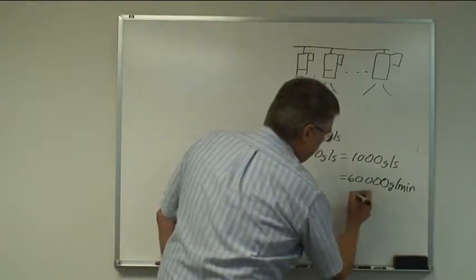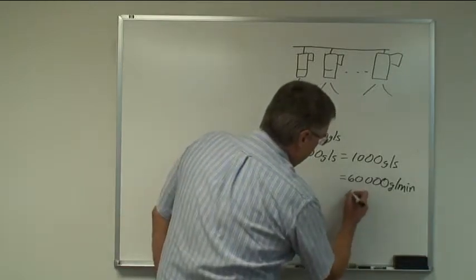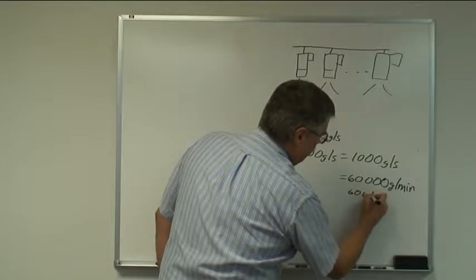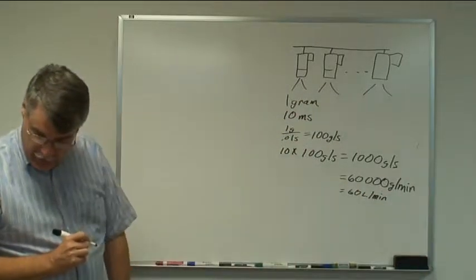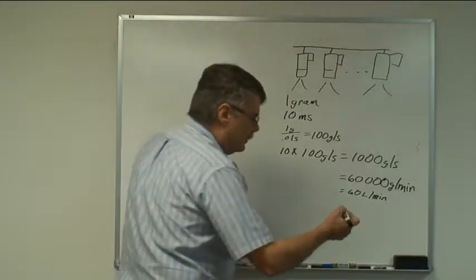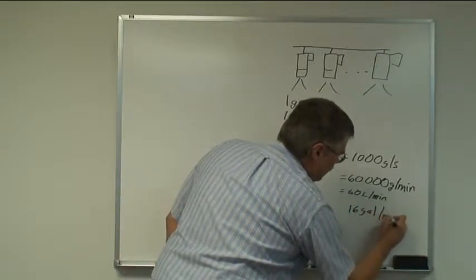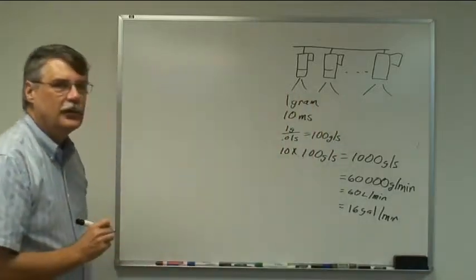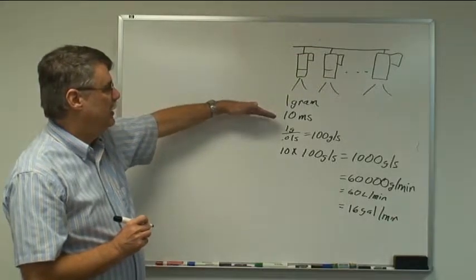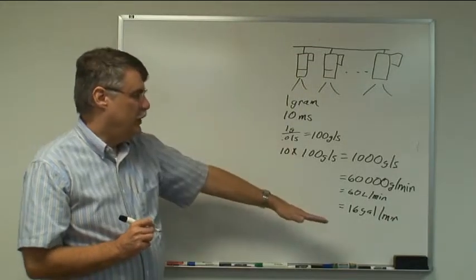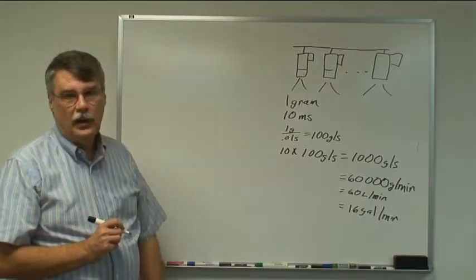Taking the density of the adhesive being about the same as water, that's about 60 liters a minute, which is quite a bit, which is actually 16 gallons a minute. That's the instantaneous flow that this system needs when all 10 of these applicators dispense 1 gram in 10 milliseconds. We need to have a fluid dispensing system that can produce 16 gallons a minute of flow.